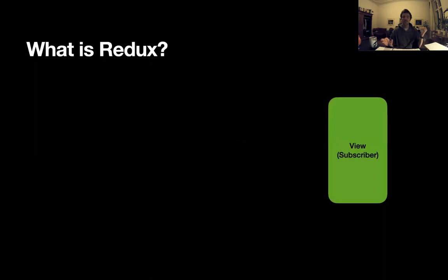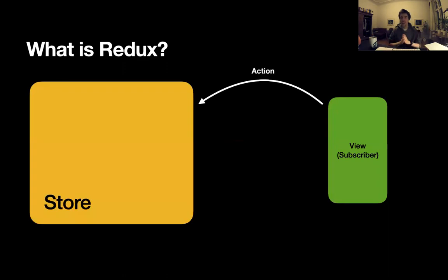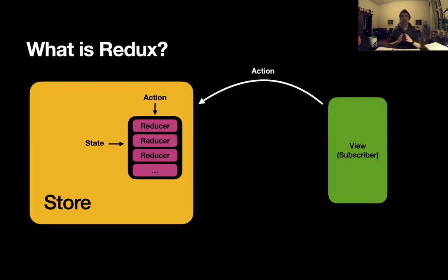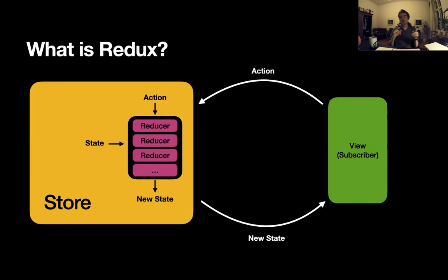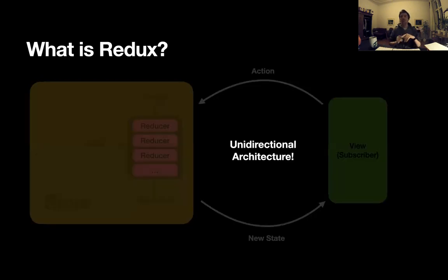The Redux diagram is fairly simple. We have a view which subscribes to the store to get events. It first sends some events to the store — it sends some actions, for example button taps or screen transitions. Any event that happens on the view goes into the store as an action. Inside, we have the business logic called reducers. They get an action and the current state and return a new state, which the view subscribes to, listens for, and then updates itself. This is a unidirectional architecture.